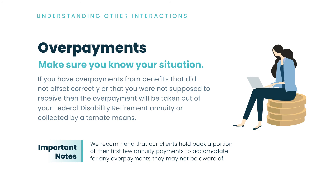Overpayments can happen frequently with disability retirement, especially given all those different offsets. If you've received workers' compensation and disability retirement concurrently, you owe money back because you're not supposed to get both at the same time. OPM will take any overpayment directly out of your annuity, your interim pay, and any back pay you may have accrued. We always recommend that once you've received your first few annuity payments or that lump back pay sum, hold a little back in the event of an overpayment, because you are responsible for paying it back.